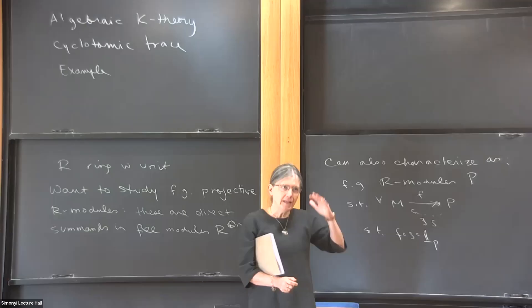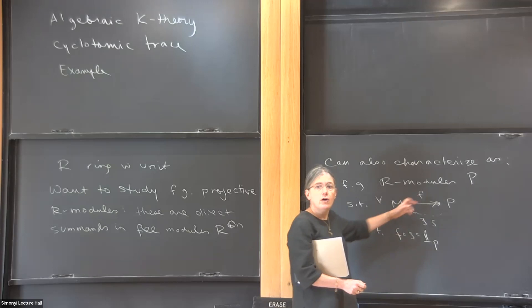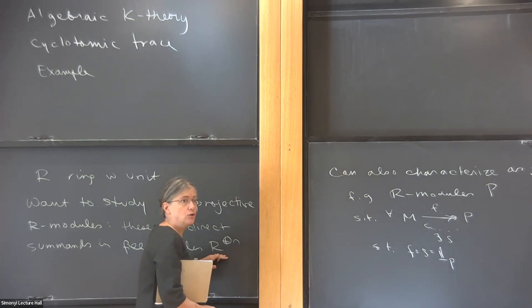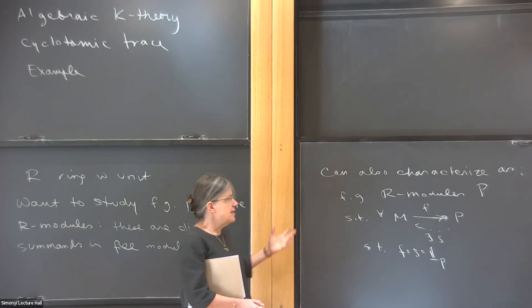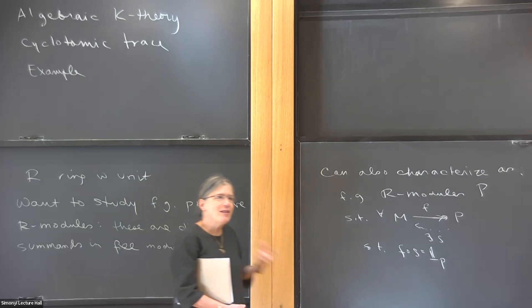If you didn't know what a free finitely generated module was and you tried to characterize them intrinsically, you could use this as a characterization of free modules. Because if you have a surjection to a free module and you want to construct a section, every one of the standard generators of the free module comes from somebody in P, so you can send it back. And because it's free, there are no constraints. You notice this also works for direct summands, so they share important properties with free modules and are interesting.